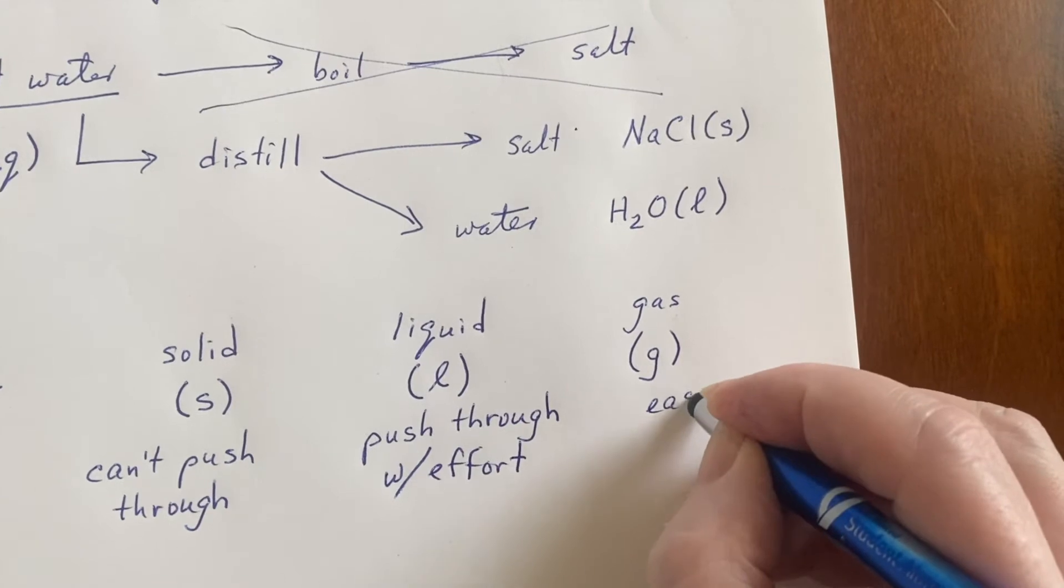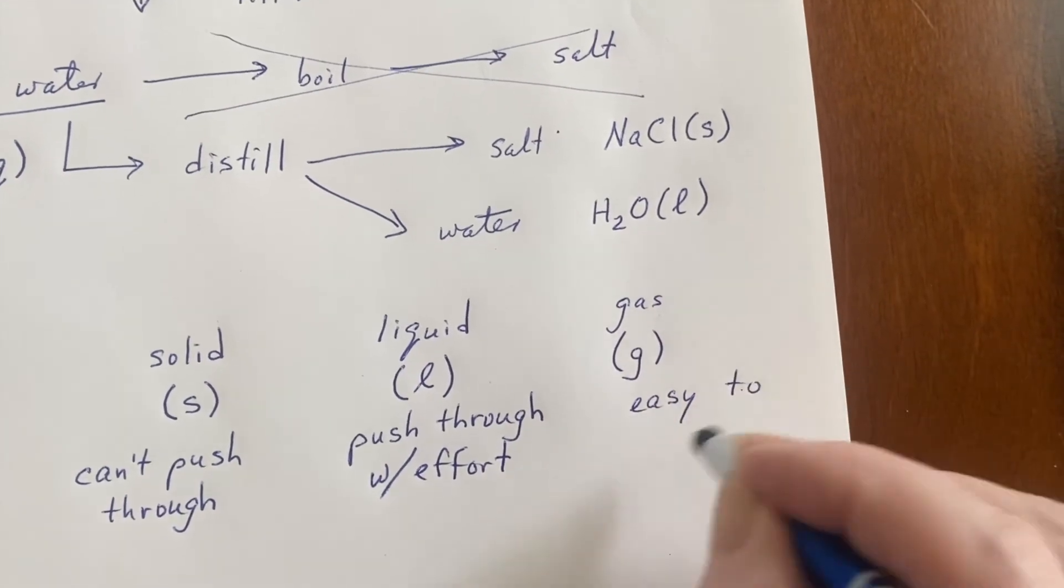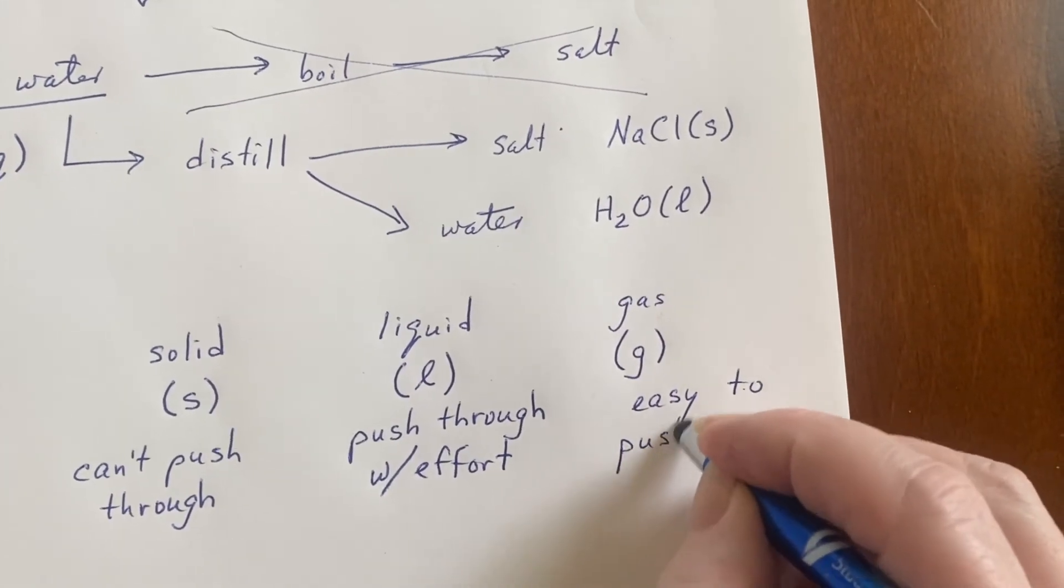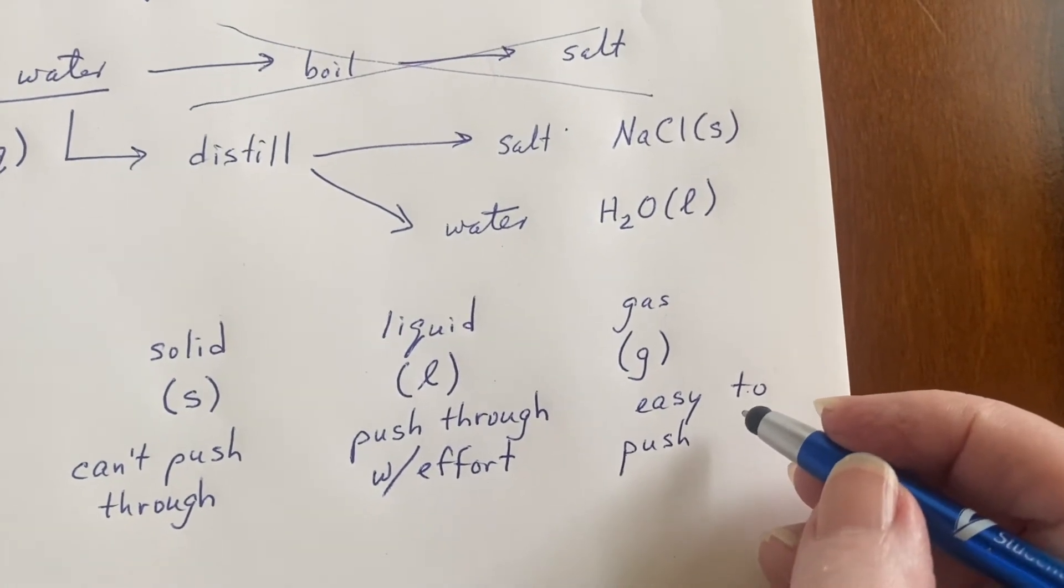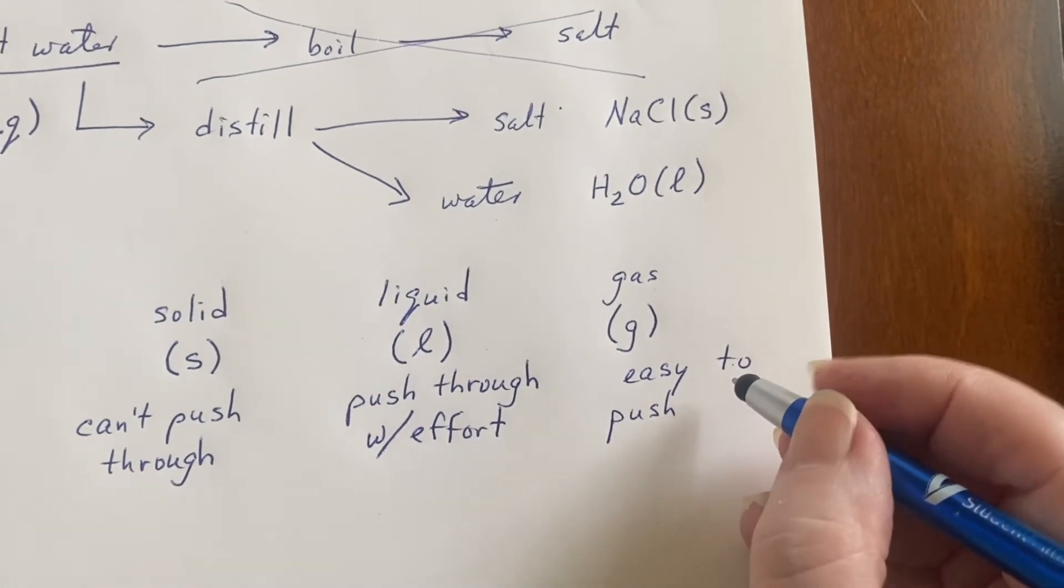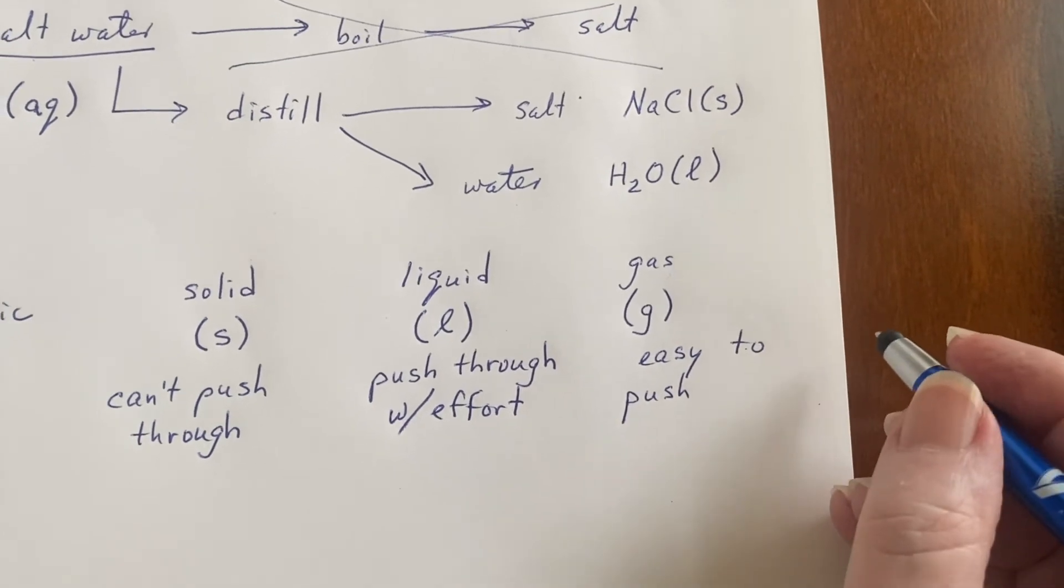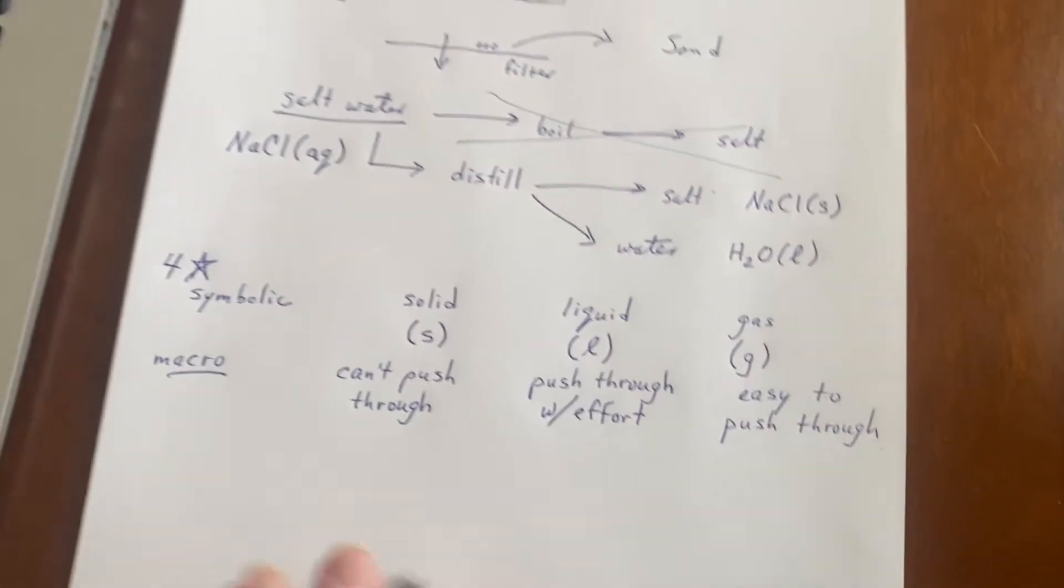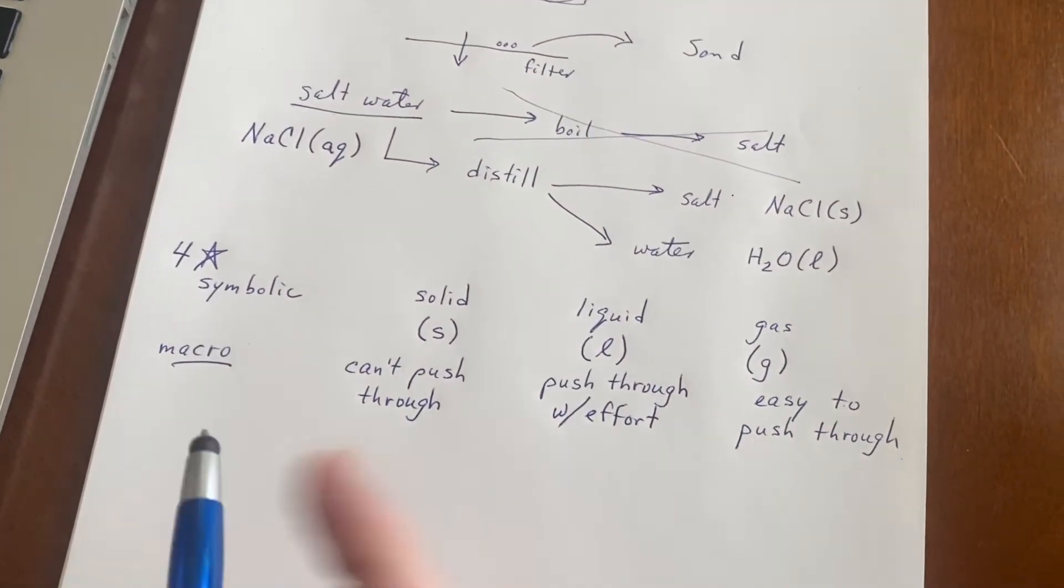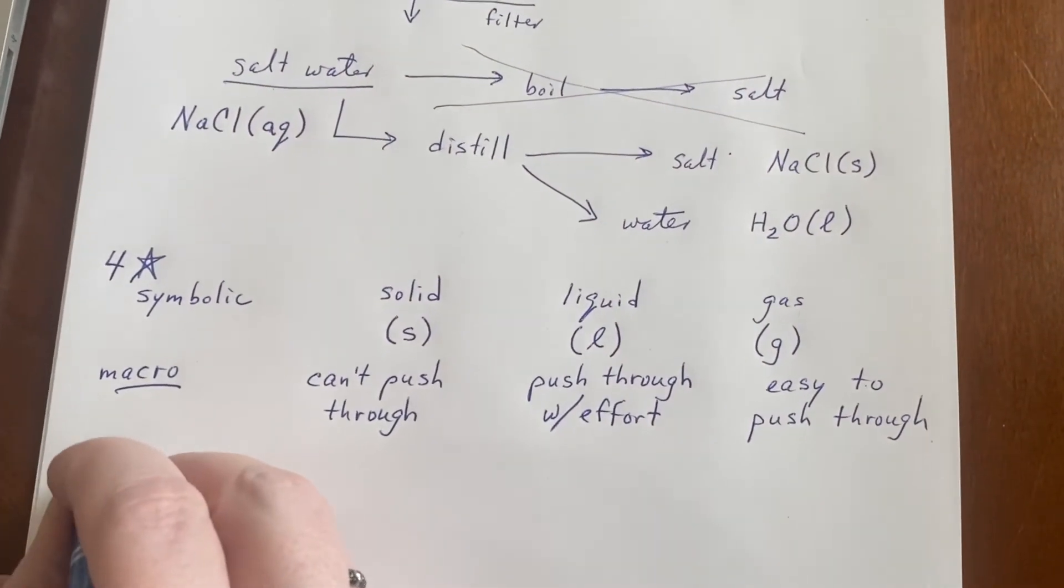When it comes to a gas, I'm just going to say it's easy to push through. Most of the time you don't even notice, but if you were going down the freeway at 70 miles an hour and you put your hand out the door, you would notice that air. But in general it's easy to push through. This is what we would see at the macroscopic level.